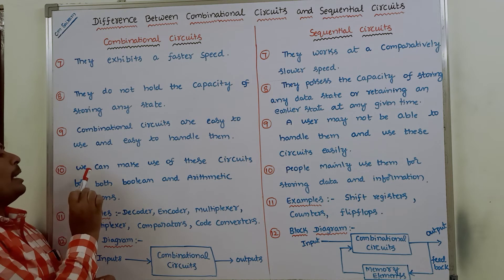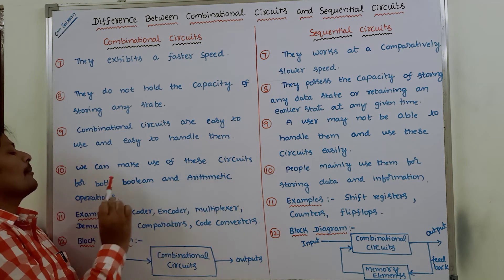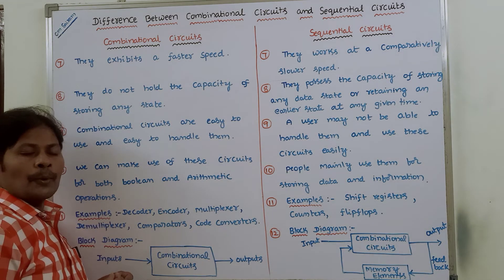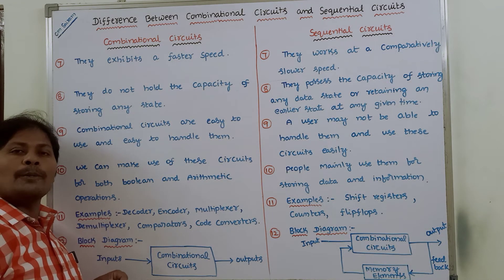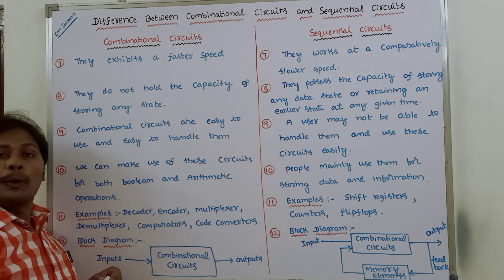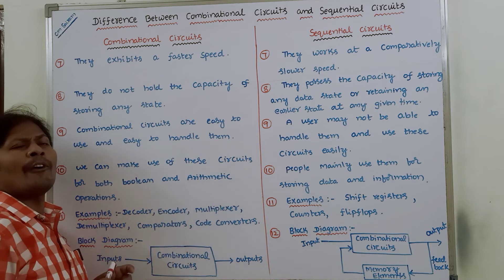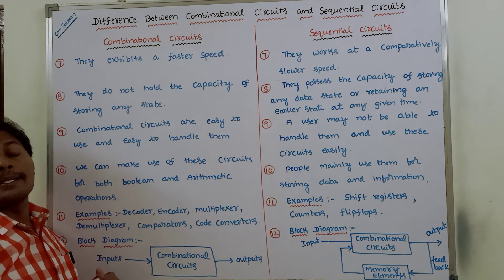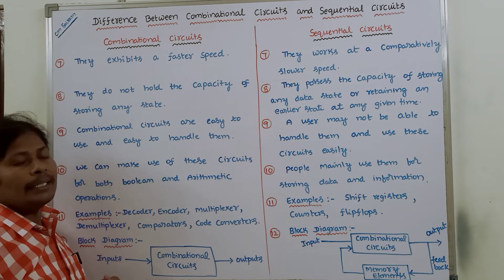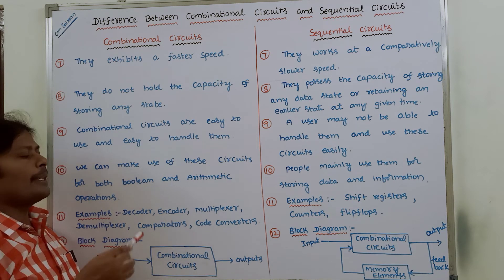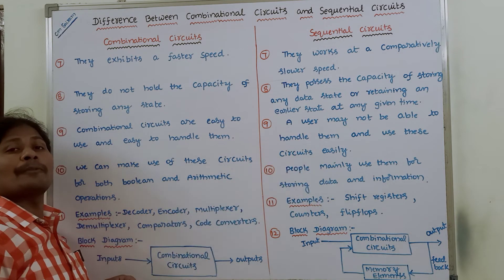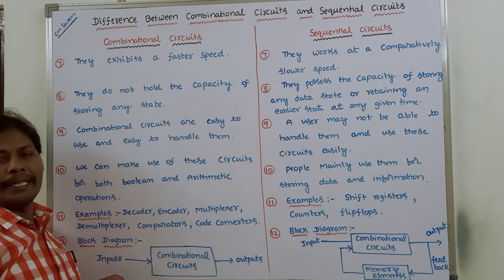Tenth point: combinational circuits can be used for both boolean and arithmetic operations. Whereas sequential circuits are mainly used for storing data and information.